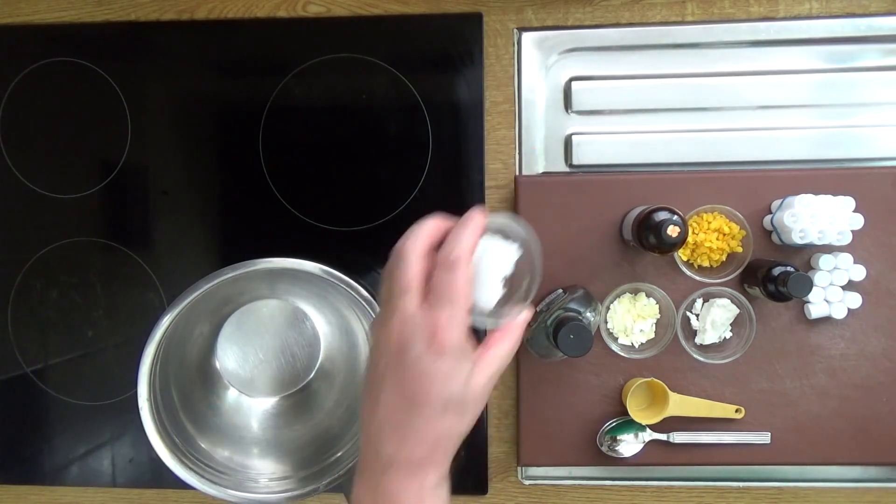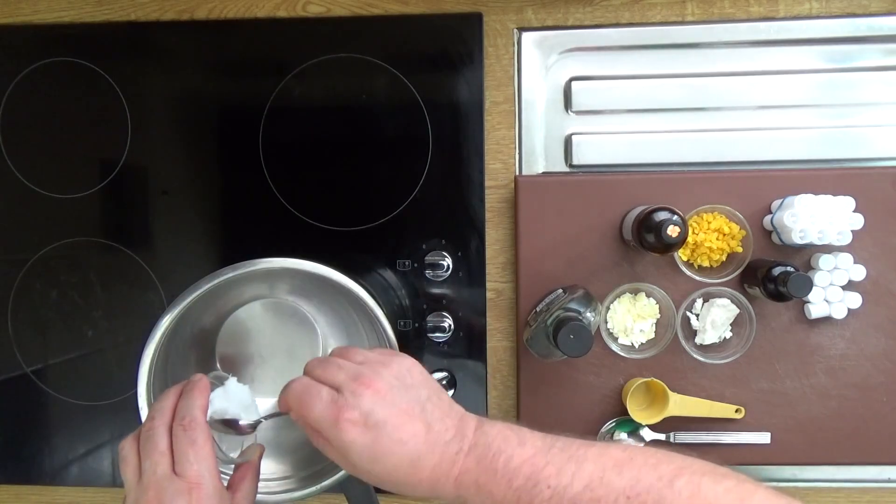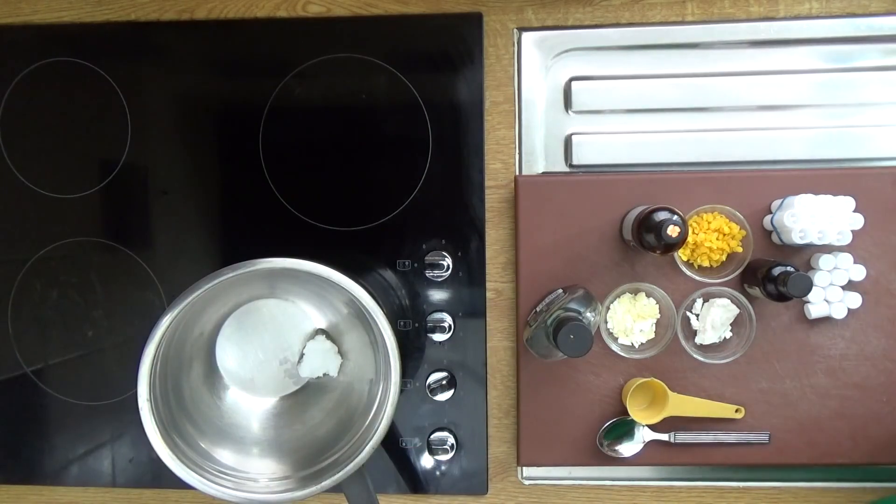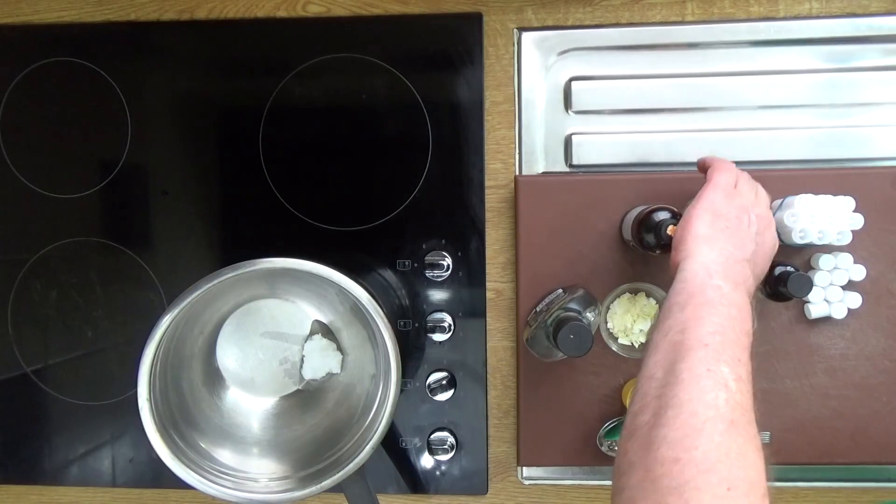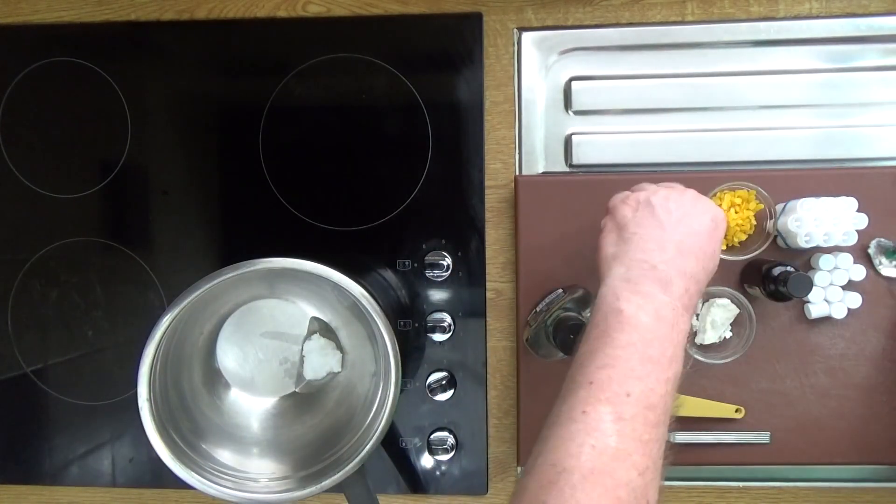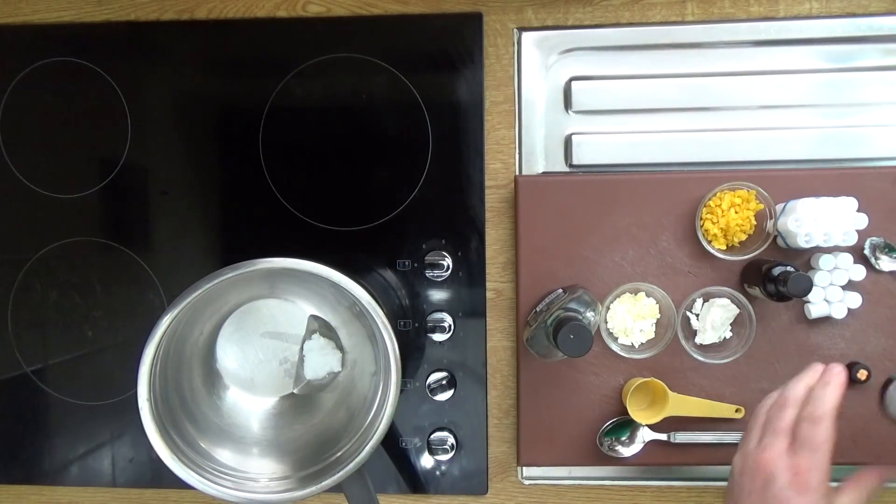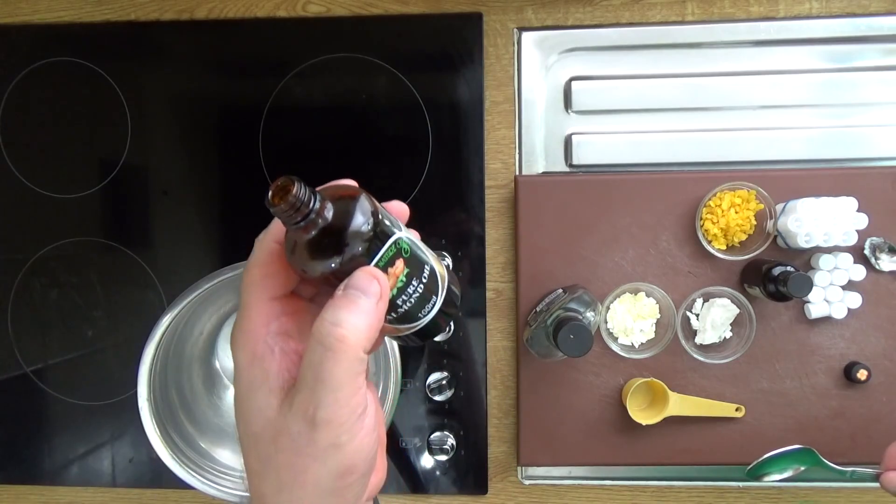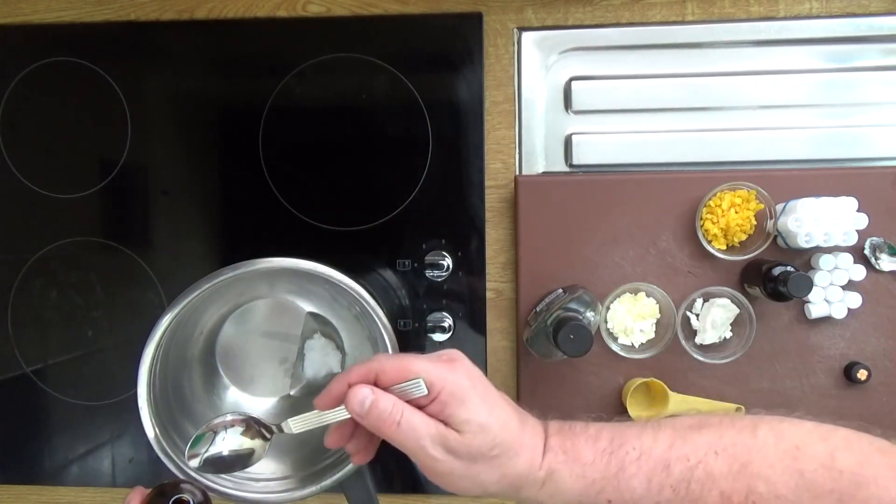I'm going to put in a tablespoon of coconut oil, and in northern climes that's what coconut oil looks like at this time of year. That goes into my double boiler and I want in there a tablespoon of sweet almond oil. That's this pure almond oil that goes in there.